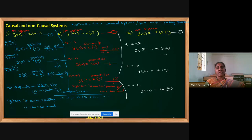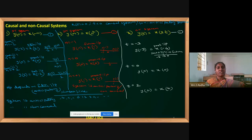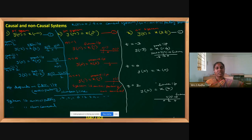On the number line, calculating y[-3] means we are at -3. Anything to the left is past and anything to the right is future. x[-6] is a past input, so present output depends on past input. But y[2] = x[4]: since x[4] is to the right of 2, it is future input. Present output depends on future input. At least one time the future comes in, so the system is anticipatory or non-causal.